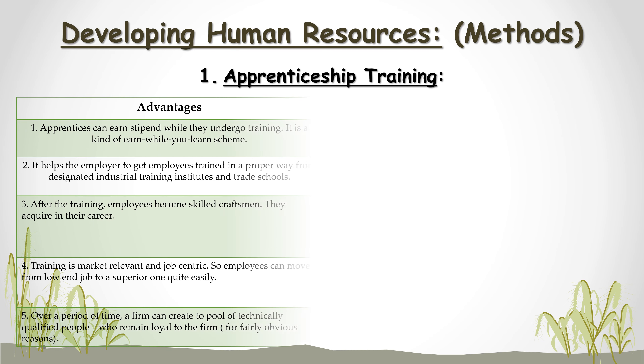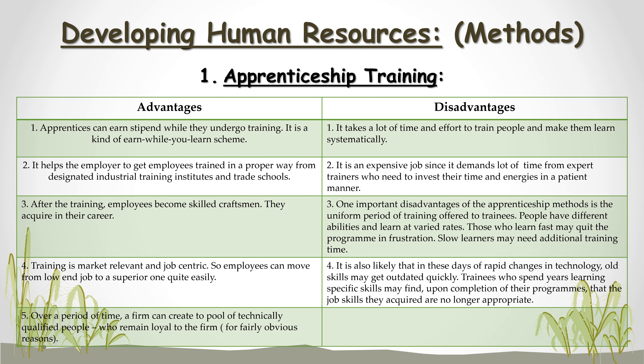Advantages. Apprentices can earn a stipend while they undergo training — it is a kind of earn-while-you-learn scheme. It helps the employer to get employees trained in a proper way from designated industrial training institutes and trade schools. After the training, employees become skilled craftsmen. Training is market-relevant and job-centric, so employees can move from a low-end job to a superior one quite easily. Over a period of time, a firm can create a pool of technically qualified people who remain loyal to the firm.